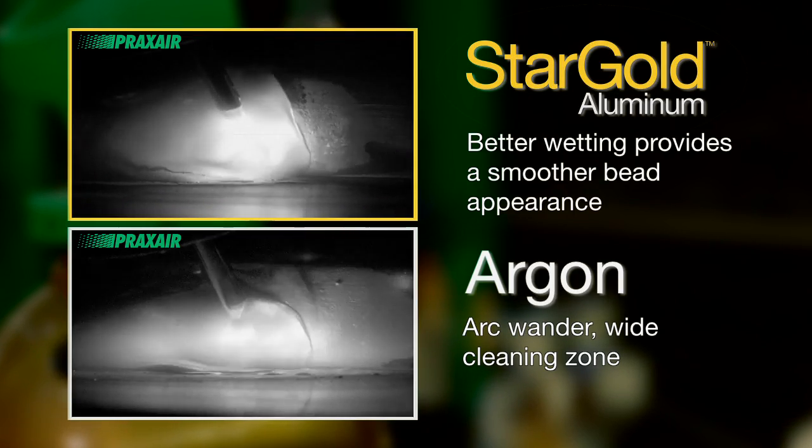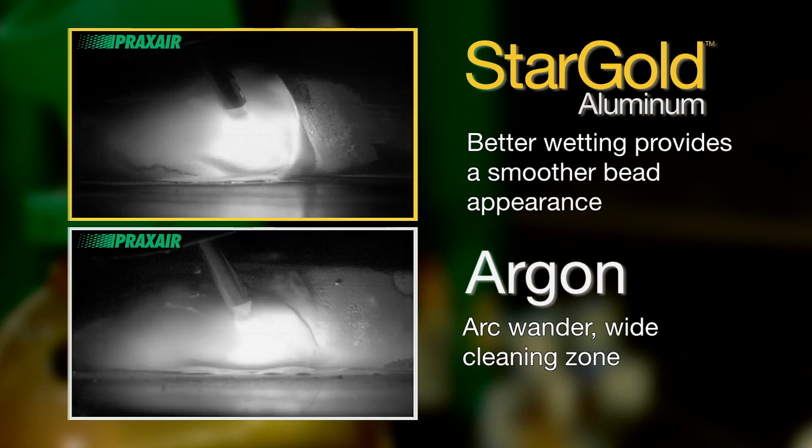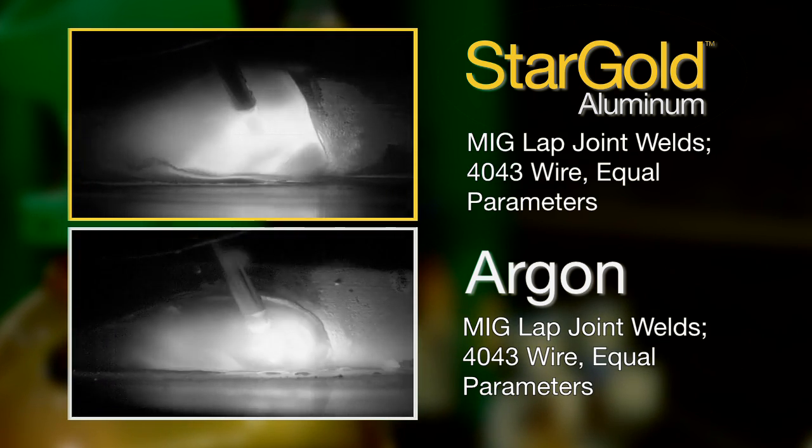When argon-only shielding is used, inconsistent metal transfer with occasional wire shorting can result in excess spatter and a rough bead appearance.